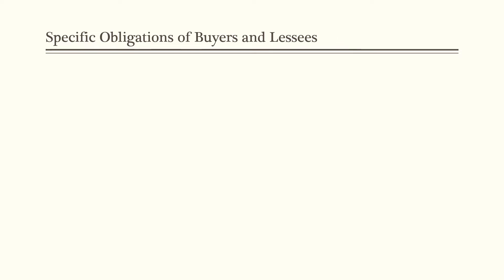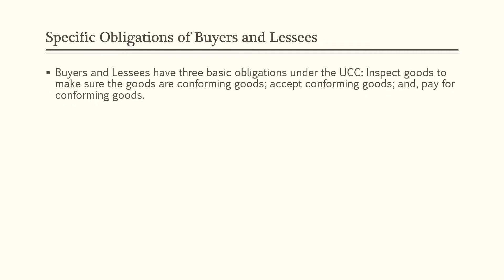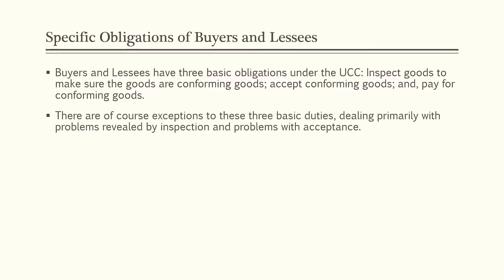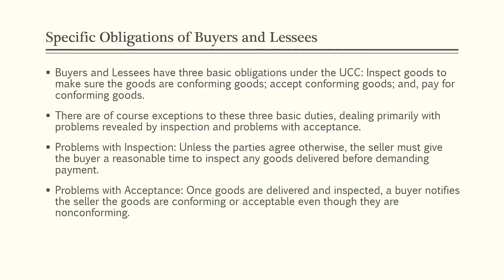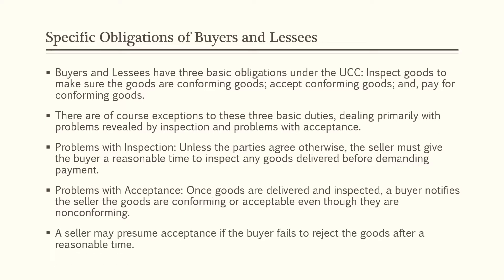Now we'll discuss the specific obligations of buyers and lessees. Buyers and lessees have three basic obligations under the UCC: inspect goods to make sure they are conforming goods, accept conforming goods, and pay for conforming goods. There are exceptions dealing with problems revealed by inspection and problems with acceptance. Unless the parties agree otherwise, the seller must give the buyer a reasonable time to inspect goods delivered before demanding payment. Once goods are delivered and inspected, the buyer notifies the seller the goods are conforming or acceptable even though they may be non-conforming. A seller may presume acceptance if the buyer fails to reject the goods after a reasonable time.